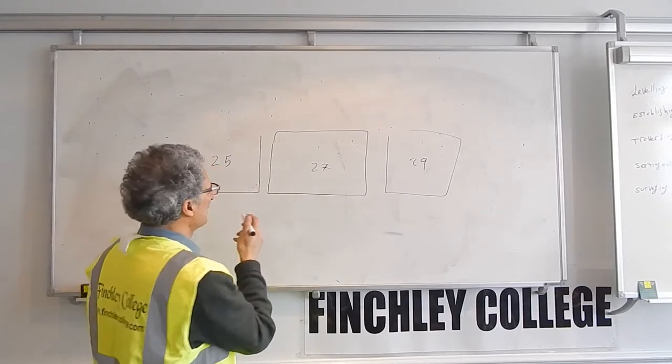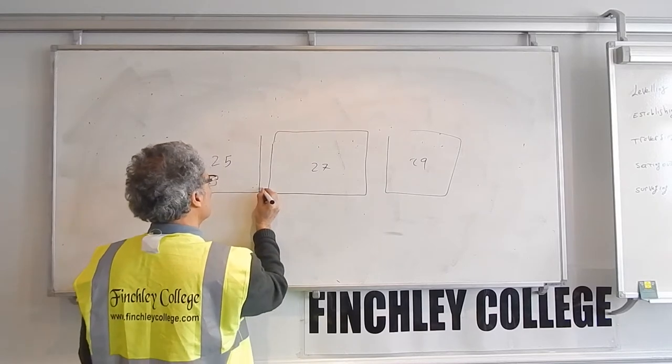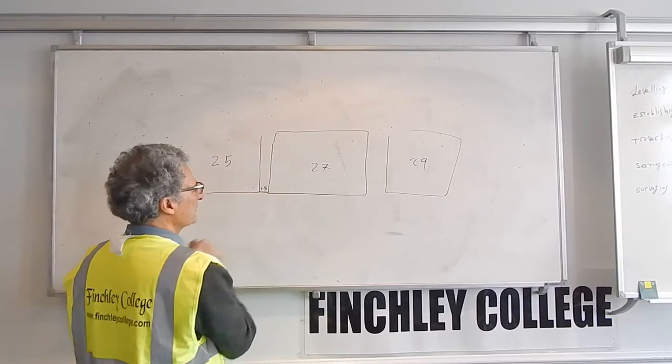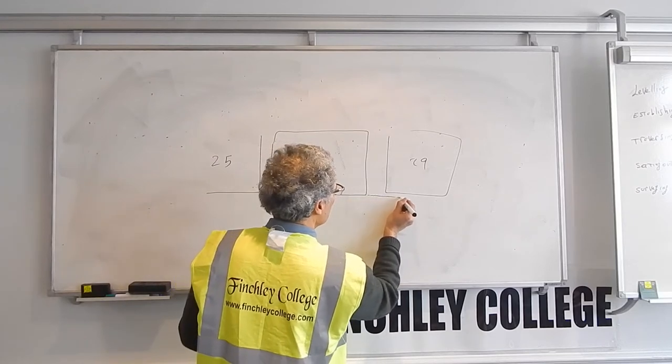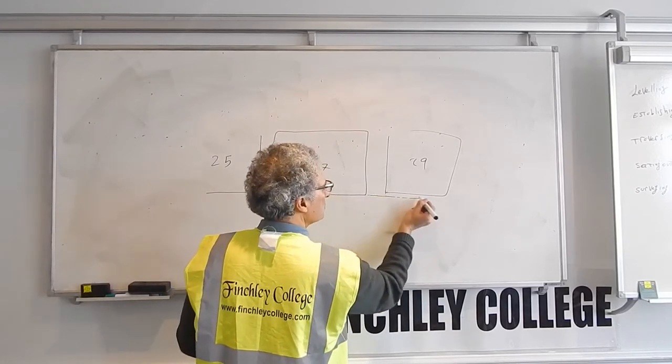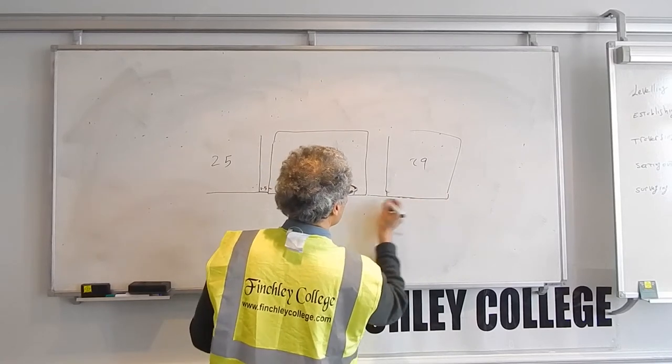But what the architect has told you, for example, is the distance between this house and this house should be 1.5 meters. And for example, I want this house to line up with the next door house, make it easier.